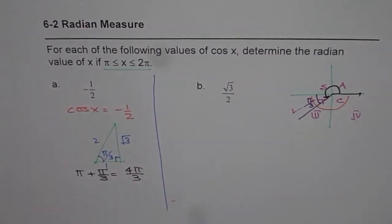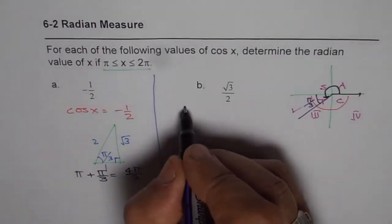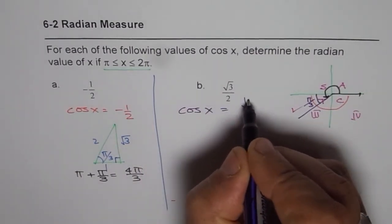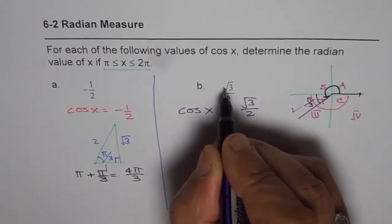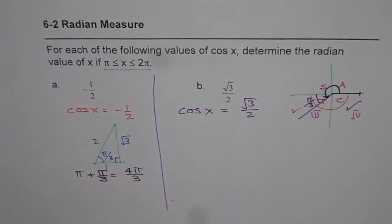We're looking for √3 over 2. Basically, cos x equals √3/2. Positive value, that means we're in quadrant 4.